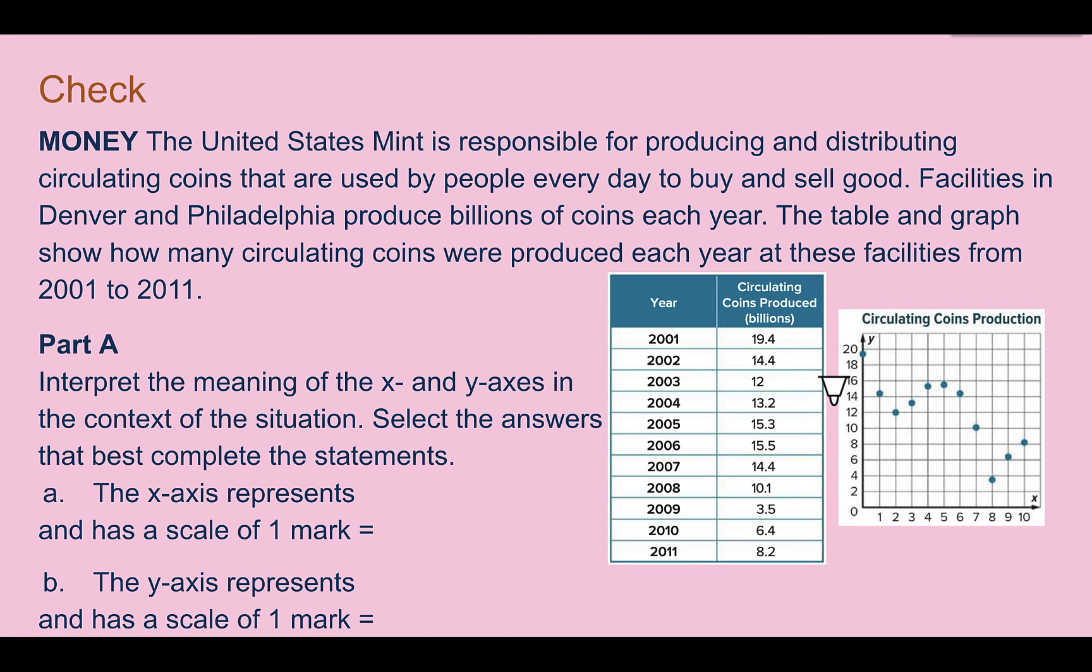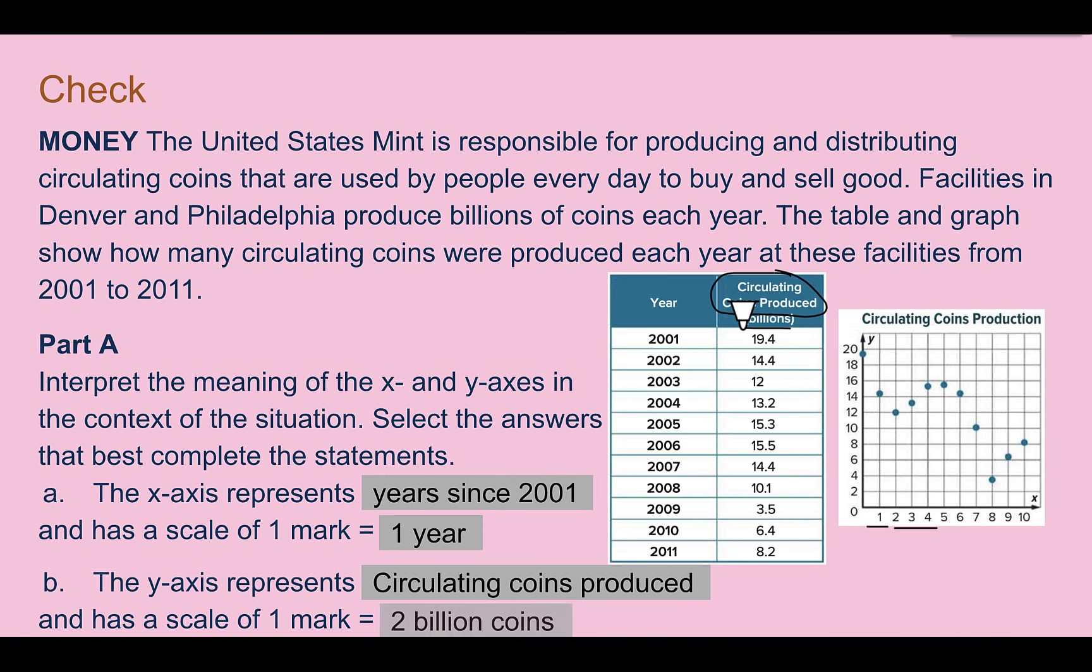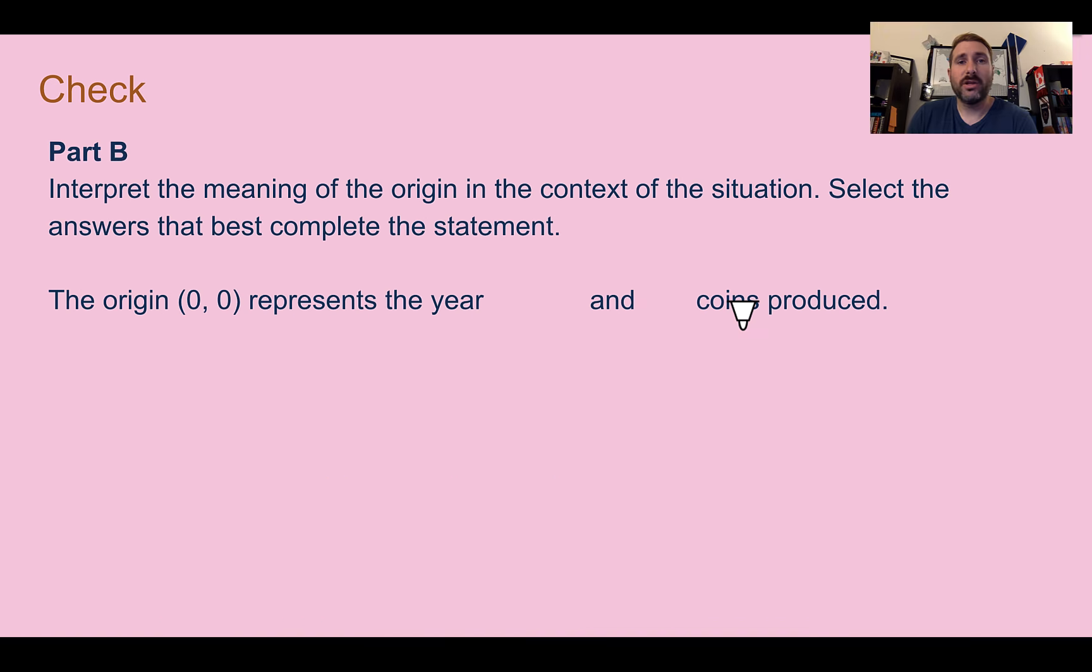Check your answers. First, the x-axis represents the years since 2001 and it has a scale of 1 year. It's counting up by 1s. The y-axis is talking about the circulating coins produced. It tells us in the table there. And it's counting up by 2s, but if we look at our unit, it is 2 billion, so 2 billion coins. What does the origin mean? It represents the year 2001 and zero coins produced.